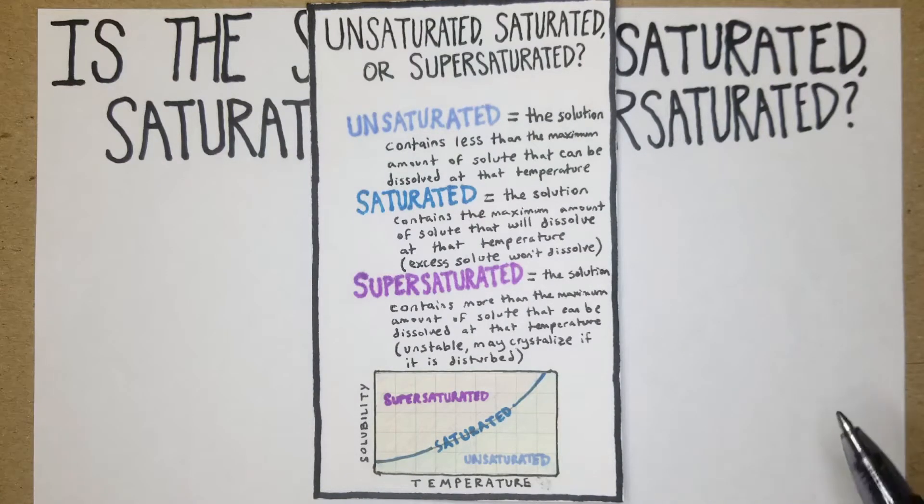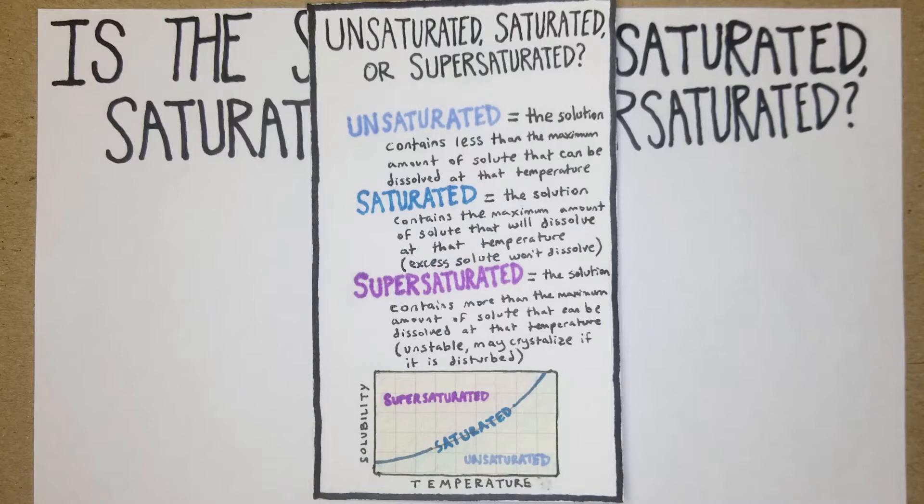A saturated solution is a solution that contains the maximum amount of solute that will dissolve at that temperature, and any excess solid won't dissolve. When I make tea a lot of times I'll see granules and particles floating around at the bottom, and that usually indicates that the water has reached its highest concentration. Same thing with drink mixes like lemonade or Gatorade mix.